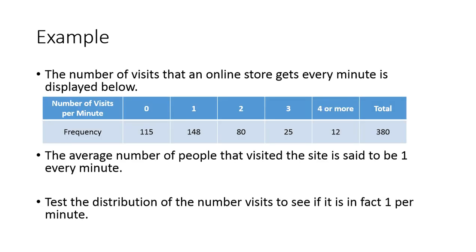Let's look at this example, which we're going to come back to. The number of visits an online store gets every minute is displayed. When there's no visitors, that occurred 115 times. One visitor was 148, two visitors occurred 80 times, 25 times they had three visitors, and 12 times they had four or more, for a grand total of 380 minutes that we're looking at.